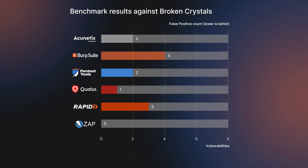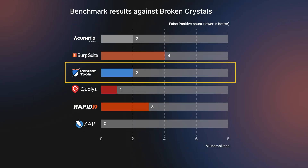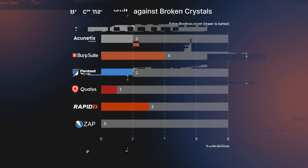While all scanners showed good detection capabilities, the rate of false positives varied quite a lot. For example, the pentesttools.com Website Vulnerability Scanner had a notably lower rate of false positives. In contrast, ZAP's higher false positive rate in DVWA scans highlighted areas for improvement.